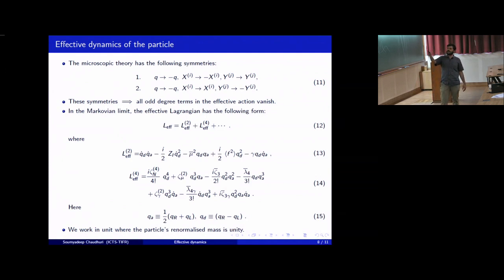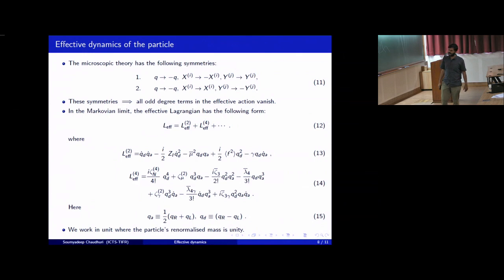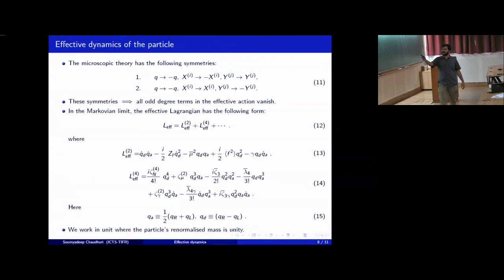In the Markovian limit, the effective action has the following form — we keep up to quartic terms in the effective action, which is why we are calling it a quartic oscillator. We express this action in terms of two degrees of freedom, Q_a and Q_d, which are basically the average and the difference of the Q_R and Q_L fields.